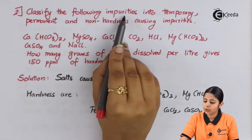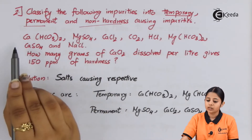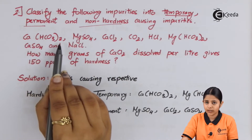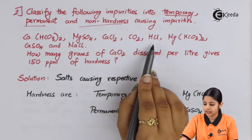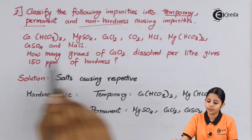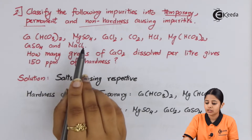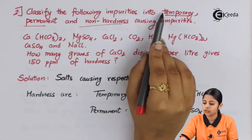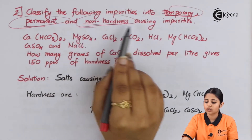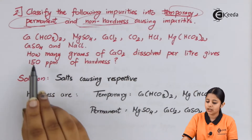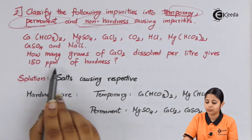Question 2: Classify the following impurities into temporary, permanent, and non-hardness causing impurities: Ca(HCO₃)₂, MgSO₄, CaCl₂, CO₂, HCl, Mg(HCO₃)₂, CaSO₄, and NaCl. The second part of the question asks: how many grams of CaCl₂ dissolved per litre gives 150 ppm of hardness?